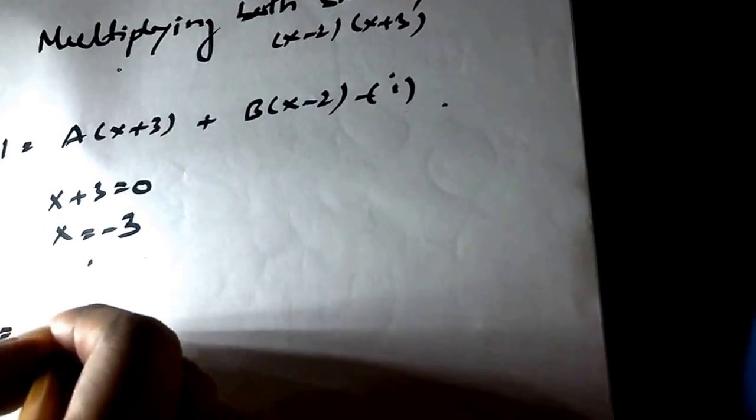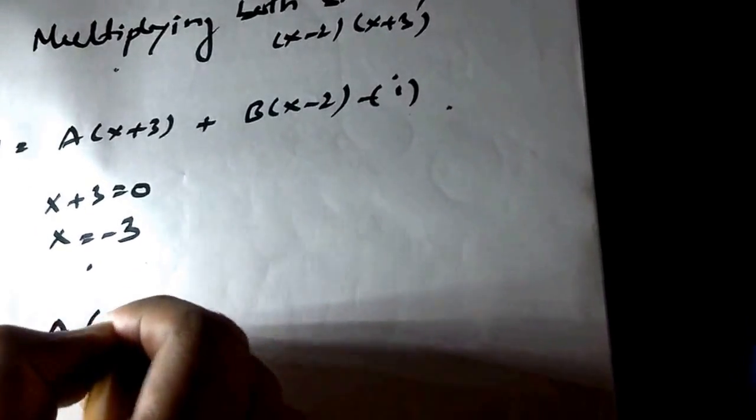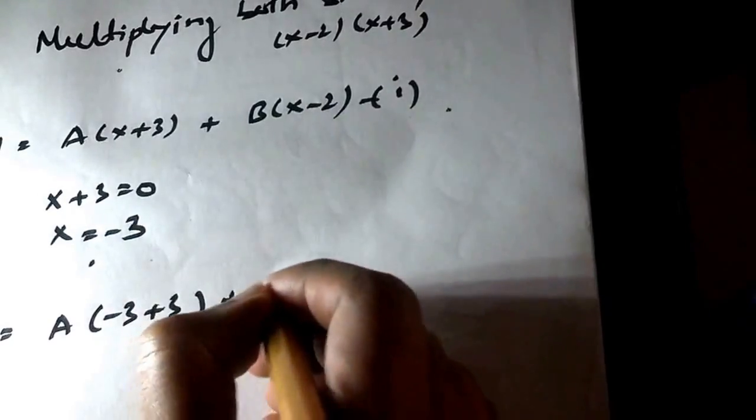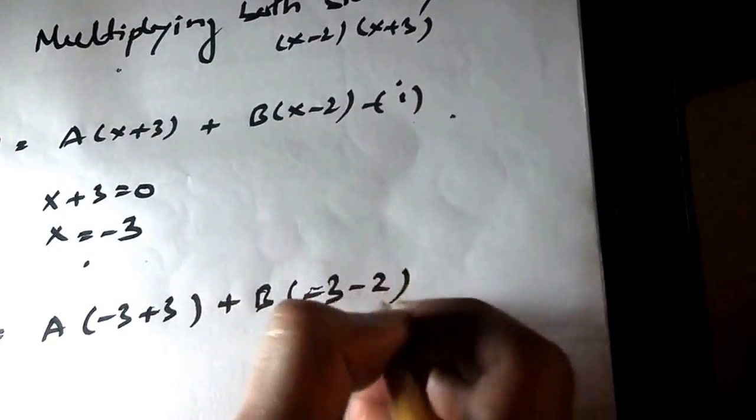So it will be x minus 3 plus 3 plus b times x minus 3 minus 2.